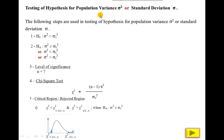Same as the mean, there are six steps. The following steps are used in testing of hypothesis for population variance sigma square or standard deviation sigma. If you take the square root of the variance it is equal to standard deviation or sigma. For the first step, the null hypothesis for mean uses notation mu equal to mu naught. For variance we use the notation sigma square equal to sigma naught square, where sigma naught square is the value of sigma square.